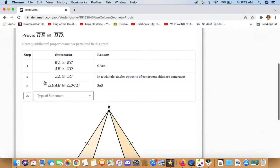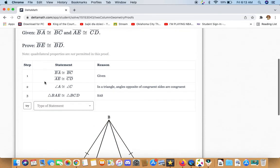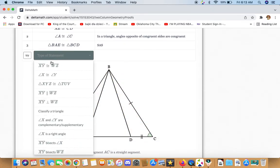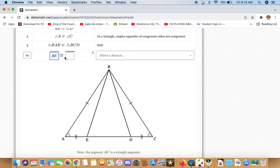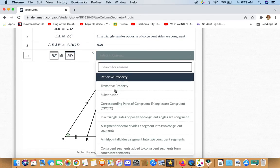Okay, we now have enough information to prove that BE is congruent to BD. The reason they are congruent is because they are corresponding parts of congruent triangles.